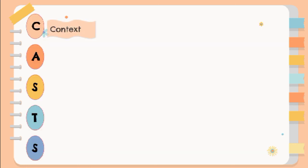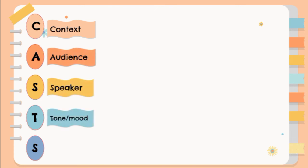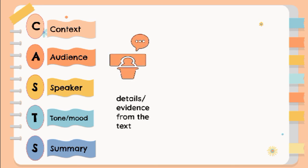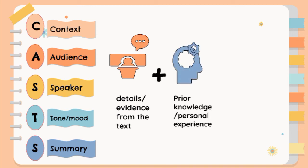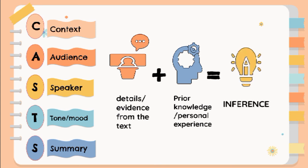Remember, the importance of applying the CASTS method to determine the worth of ideas in a listening text was emphasized in this lesson. You can utilize the method to make simple inferences from the details provided in the text, which is especially useful when summarizing the speaker's message. The formula to remember for making inferences is: Details or evidence from the text plus prior knowledge or personal experience equals inference. Thank you so much everyone. I hope you learned something today. This is Teacher Judea.